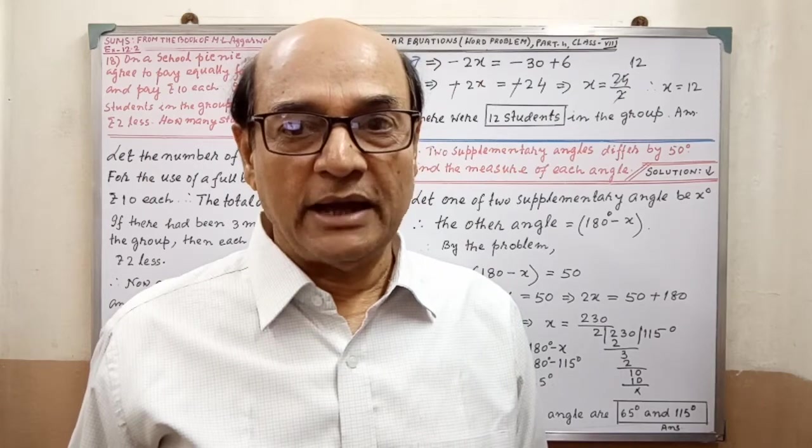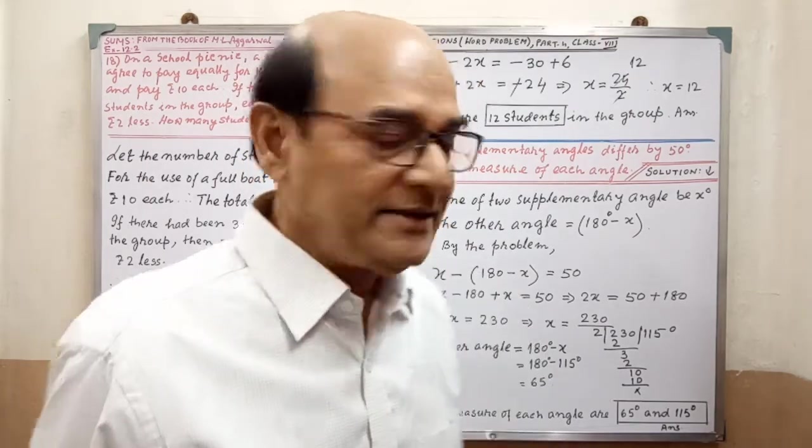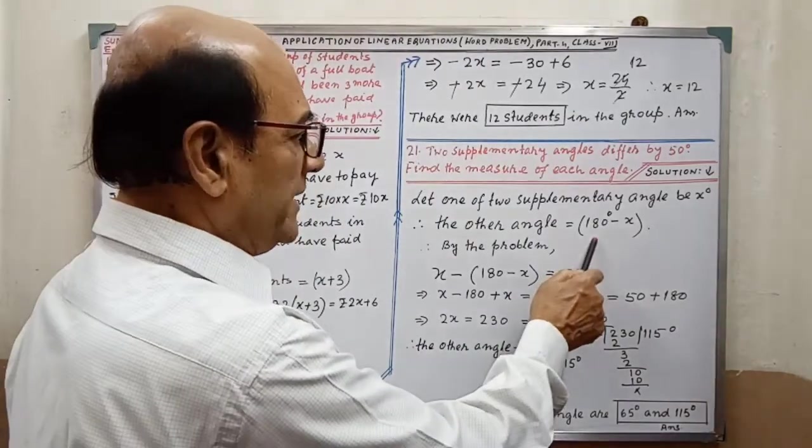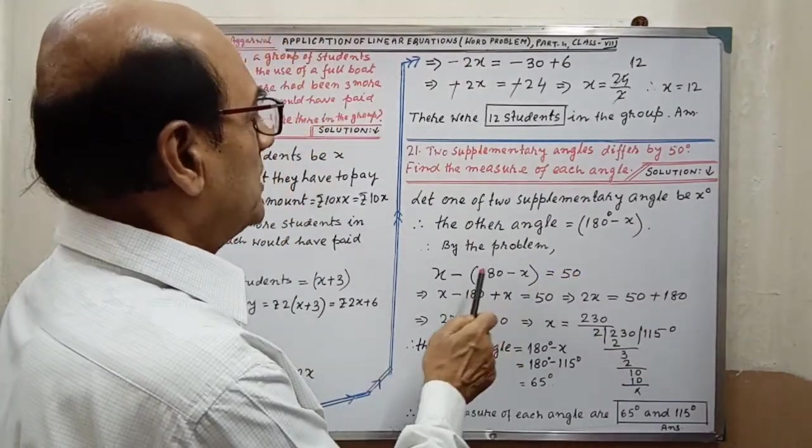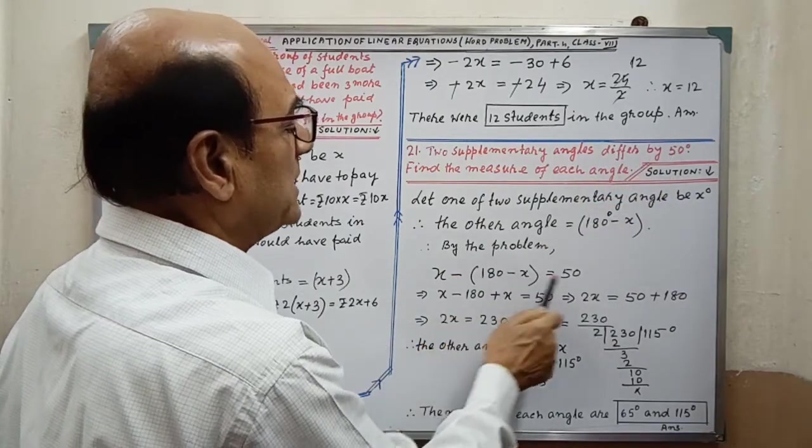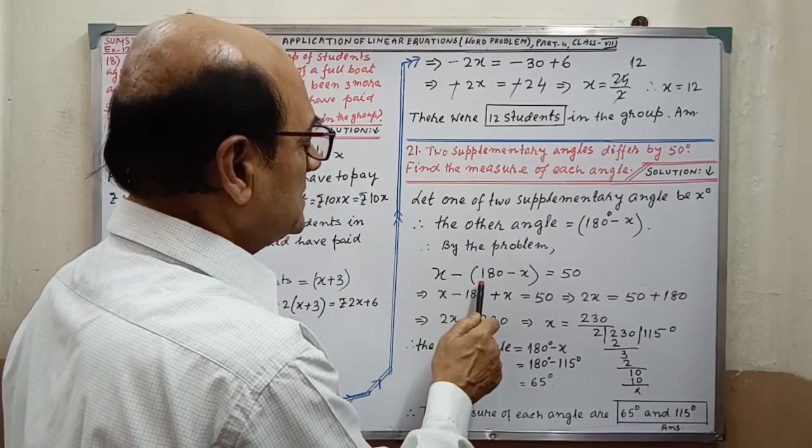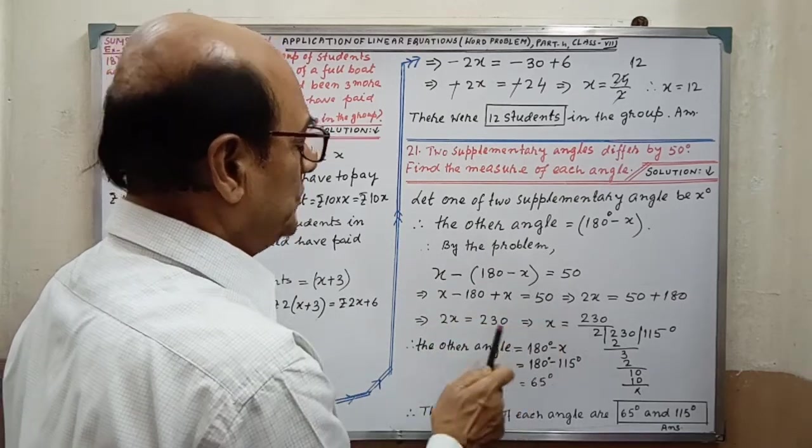Supplementary angle, that means sum of two angles will be 180 degrees. This is why 180 minus x. Now by the problem, differs 50 degrees. Now the difference between two angles is 50 degrees. This is why x minus (180 minus x) equal to 50.